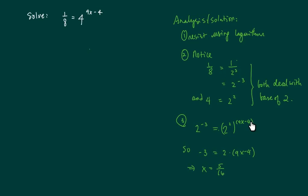Now using the property of exponents, I see that 2 to the minus 3 is really equal to 2 times 9x minus 4. I can equate the exponents and solve for x much easier. And our final answer here is x equals 5 over 16.